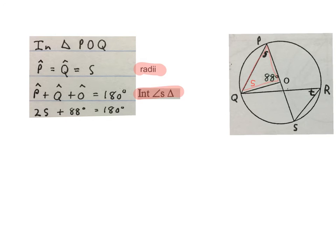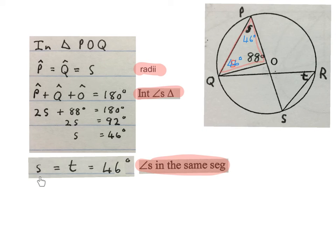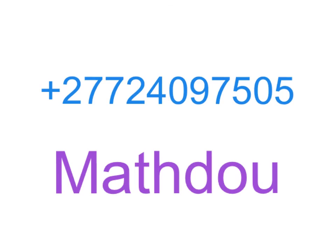We write angle P plus angle Q plus angle O equals 180 — interior angles of a triangle. Substituting: 2S plus 88 equals 180. Minus 88, so 2S equals 92, and dividing by 2 gives S equals 46 degrees. I write it on the sketch in both positions. Then S equals T equals 46 degrees — angles in the same segment.